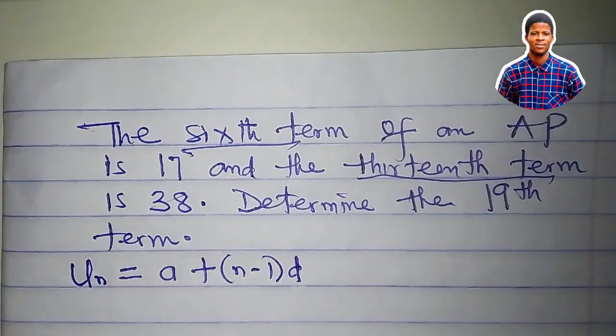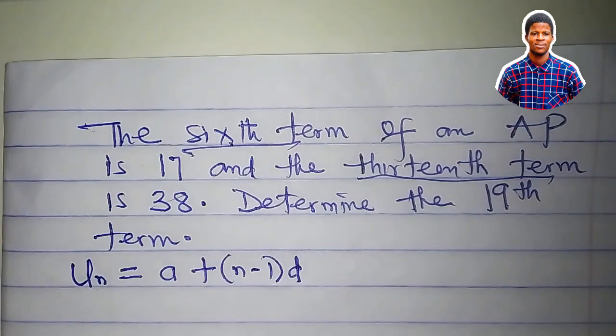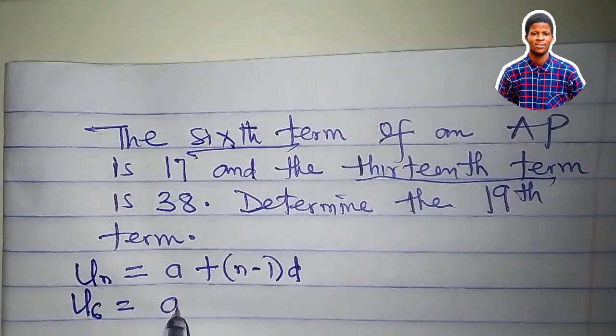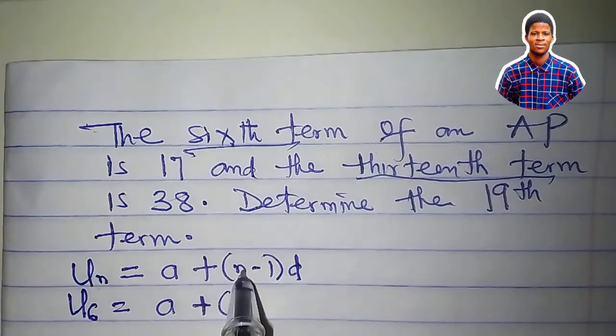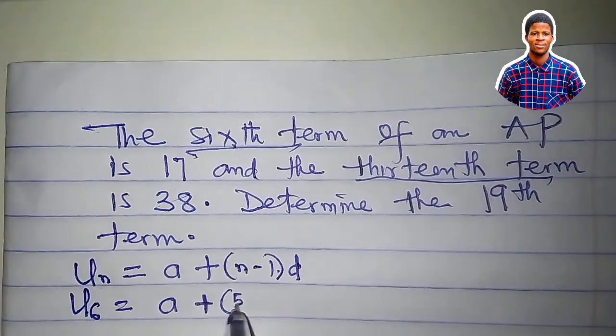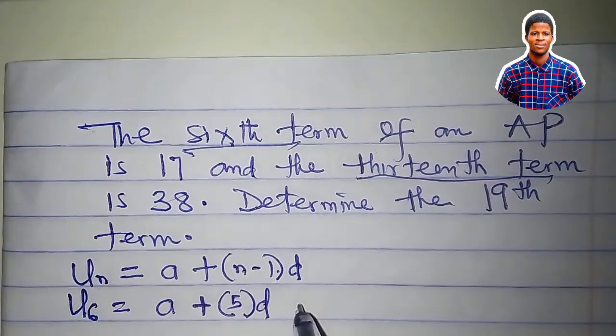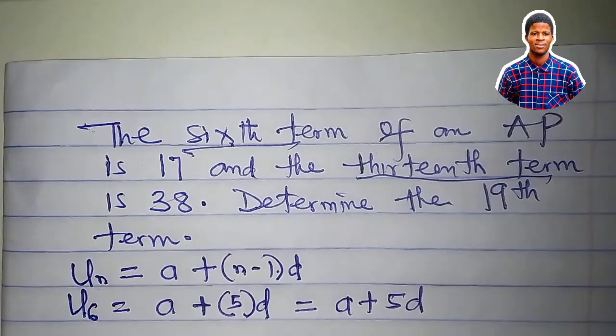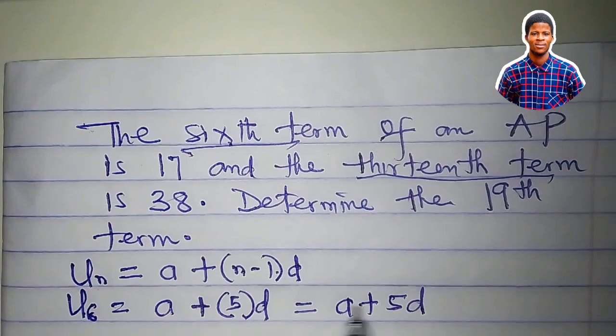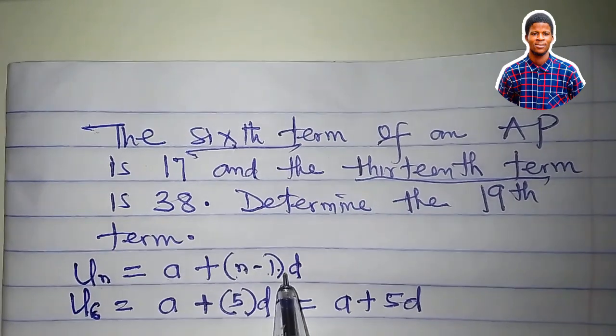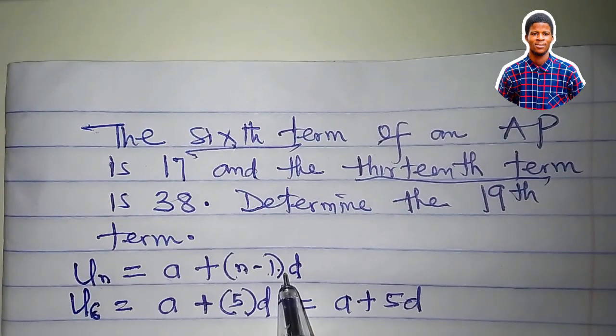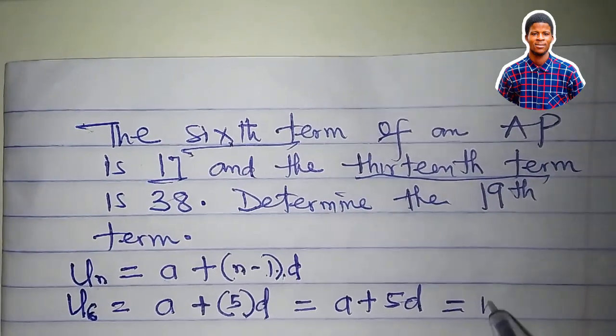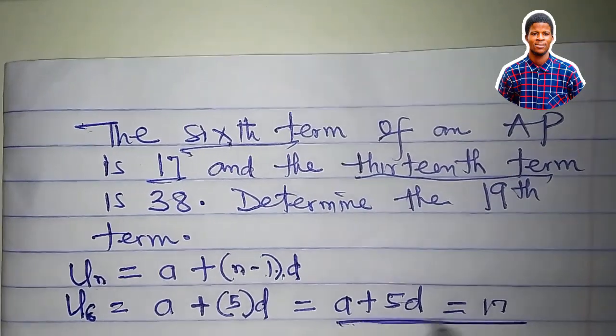So what would be U sub 6, that is the sixth term? It would be equal to A plus n minus 1 which is 5, that's 5d. And this is equal to A plus 5d. This is the sixth term using the nth term formula. And the question says that the sixth term is 17, it means that this is equal to 17. This will form my first equation, equation 1.